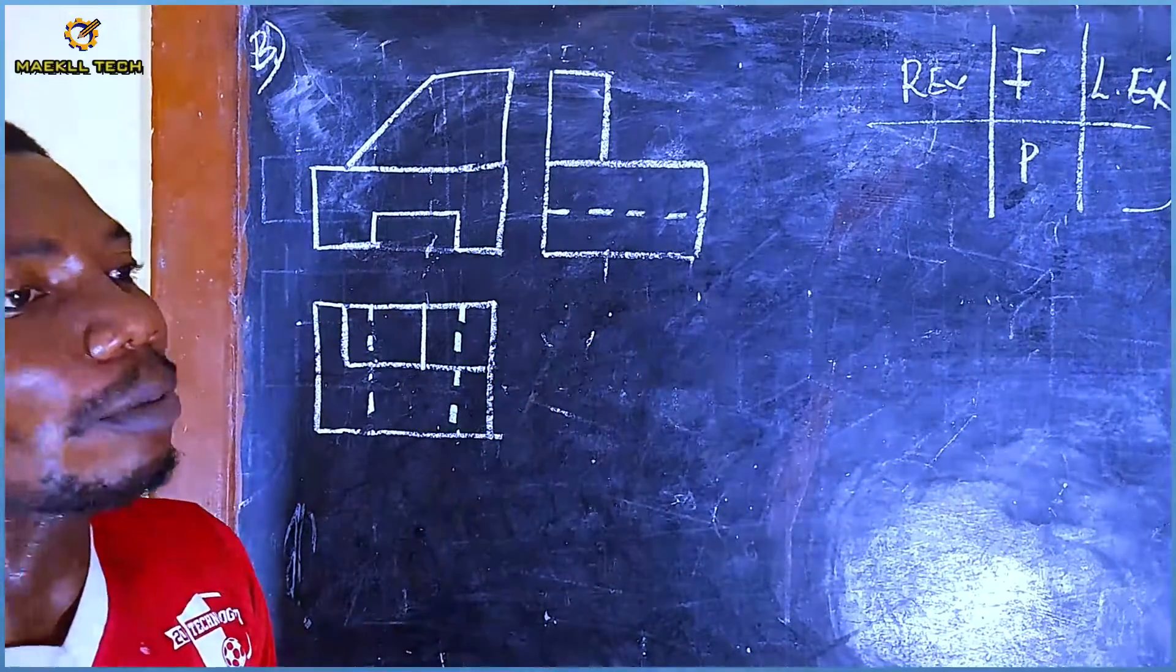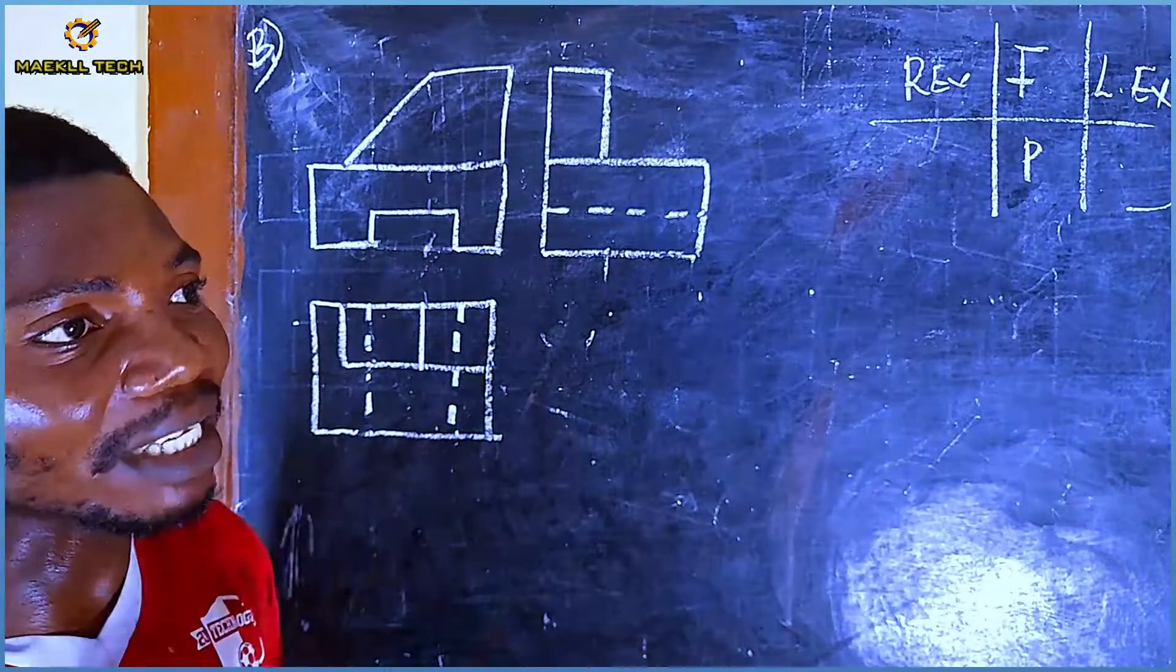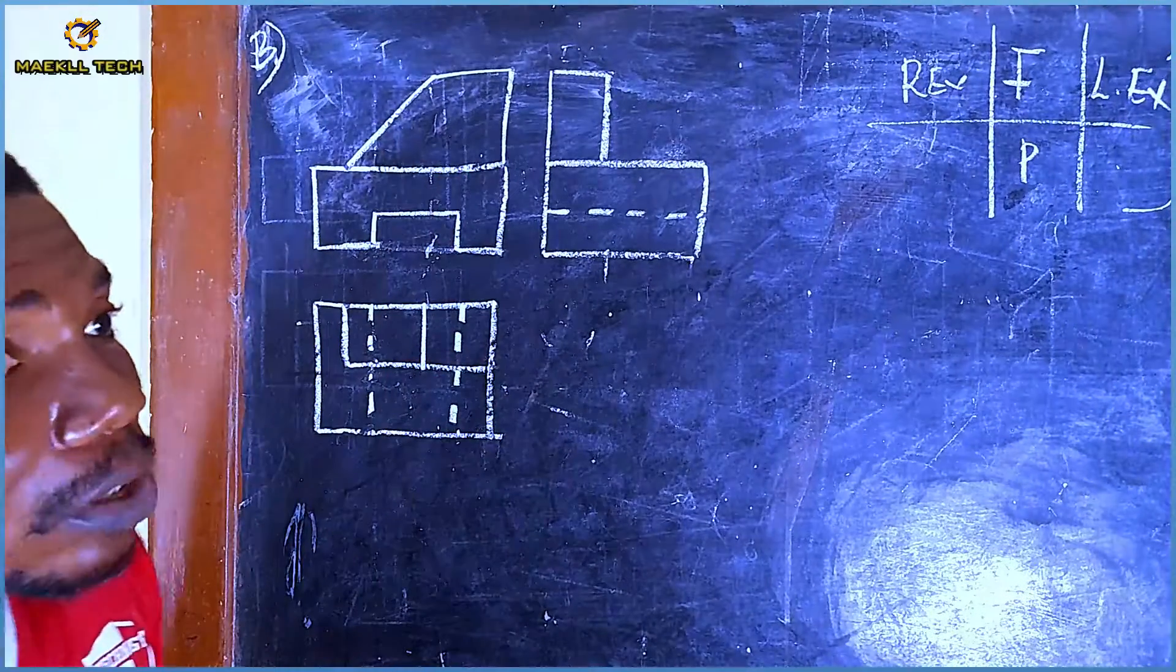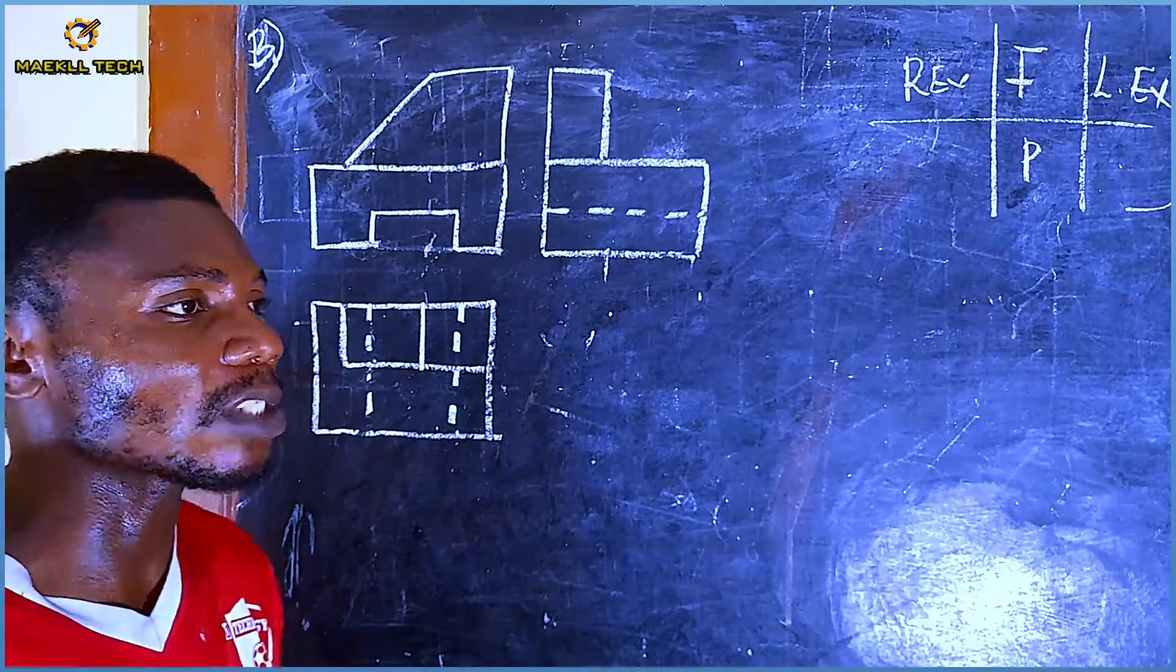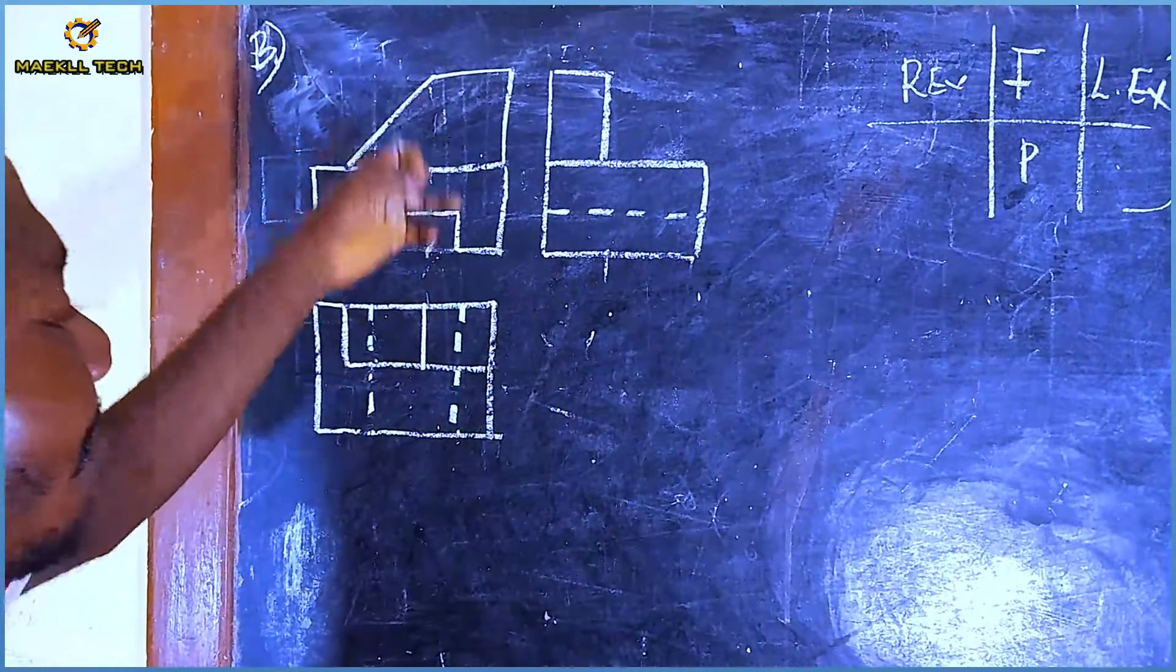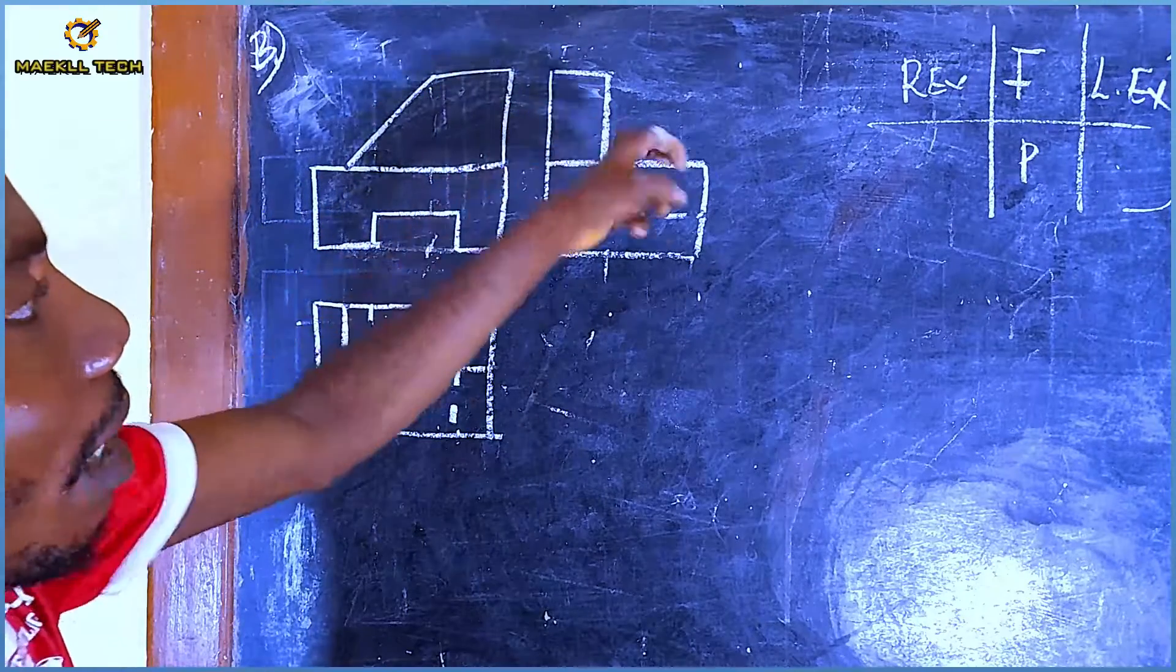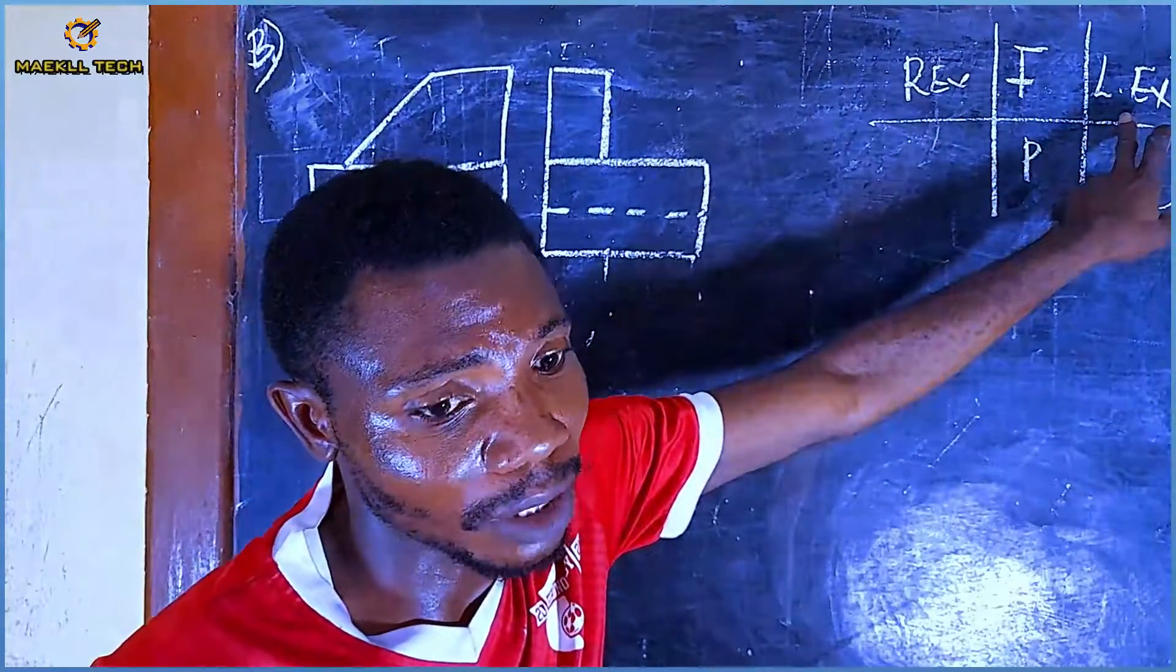This same problem is in first angle. This is my front view, this is my plan, and my end view. This end view is our left end view based on the chart for first angle orthographic projection.